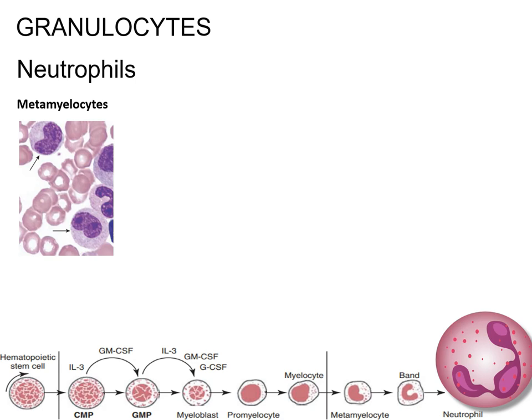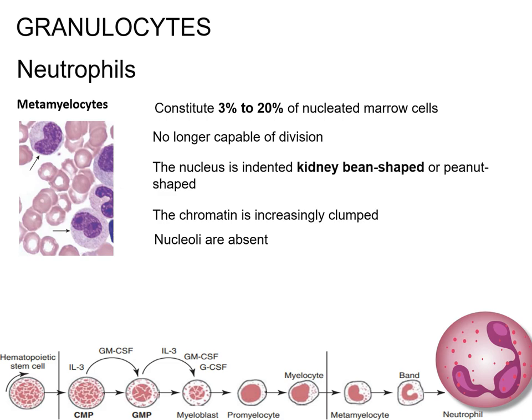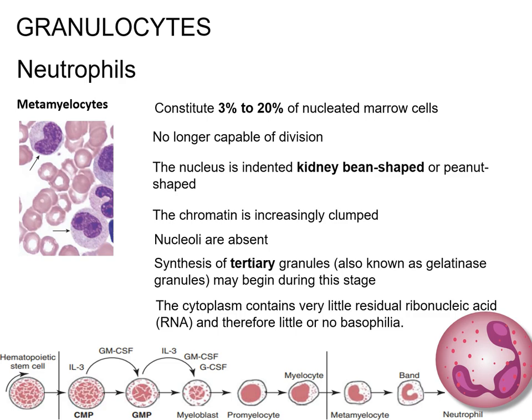Metamyelocytes constitute 3–20% of nucleated marrow cells. From this stage forward, cells are no longer capable of division, and a major morphologic change is in the shape of the nucleus, which is indented, kidney bean-shaped or peanut-shaped, with increasingly clumped chromatin. Nucleoli are absent. Synthesis of tertiary granules, also known as gelatinase granules, may begin during this stage. The size of the metamyelocyte is slightly smaller than that of the myelocyte. The cytoplasm contains very little residual RNA and therefore little or no basophilia.